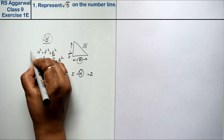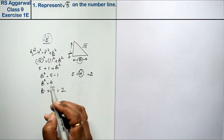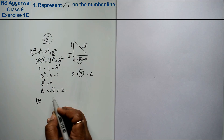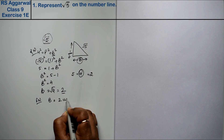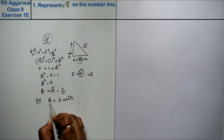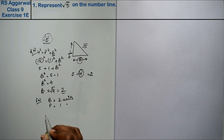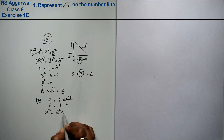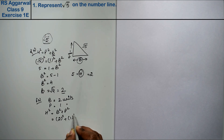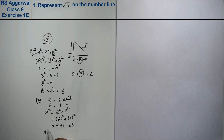This is our rough work — we will not do it in the fair work. For the fair work, we know that base is 2 units and perpendicular is 1 unit. Applying h² equals b² plus p²: 2² plus 1² equals 4 plus 1 equals 5. So h² equals 5, meaning h equals root 5.